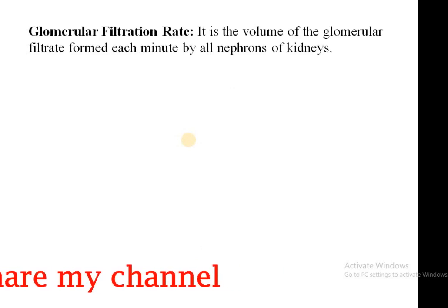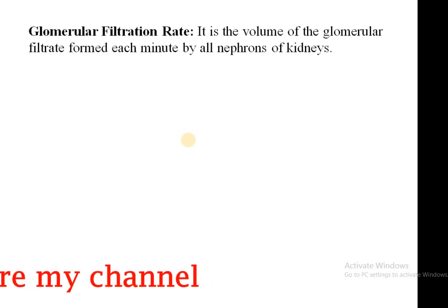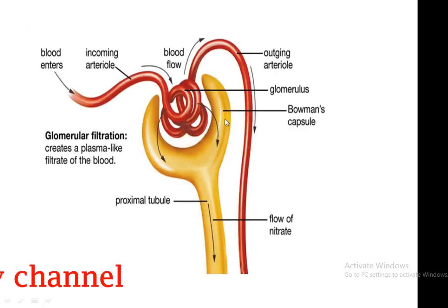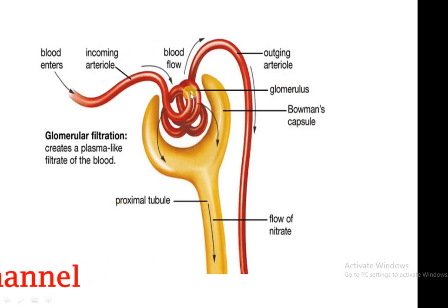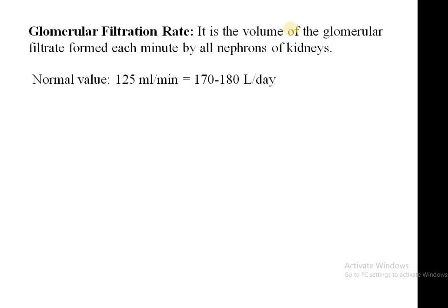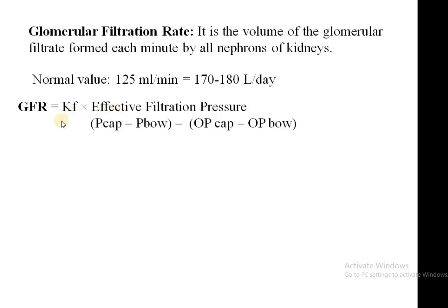What is the glomerular filtration rate? It is the volume of the glomerular filtrate formed each minute by all nephrons of the kidney. The total volume formed is known as the glomerular filtration rate — 125 ml per minute, or 170 to 180 liters per day. The formula for GFR is: Kf multiplied by effective filtration pressure, where Kf is the filtration coefficient of the glomerular membrane.